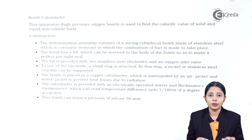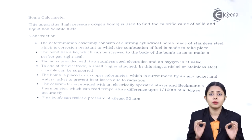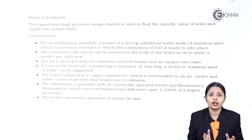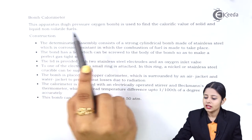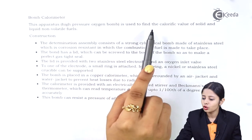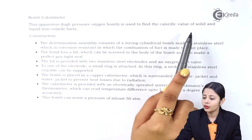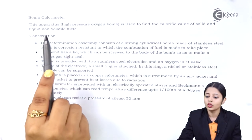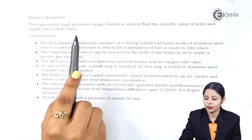Now let us study what exactly a bomb calorimeter is. A bomb calorimeter is a device by which we can find out the calorific value of a fuel. This apparatus — a high-pressure oxygen bomb — is used to find out the calorific value of solid and liquid non-volatile fuels.